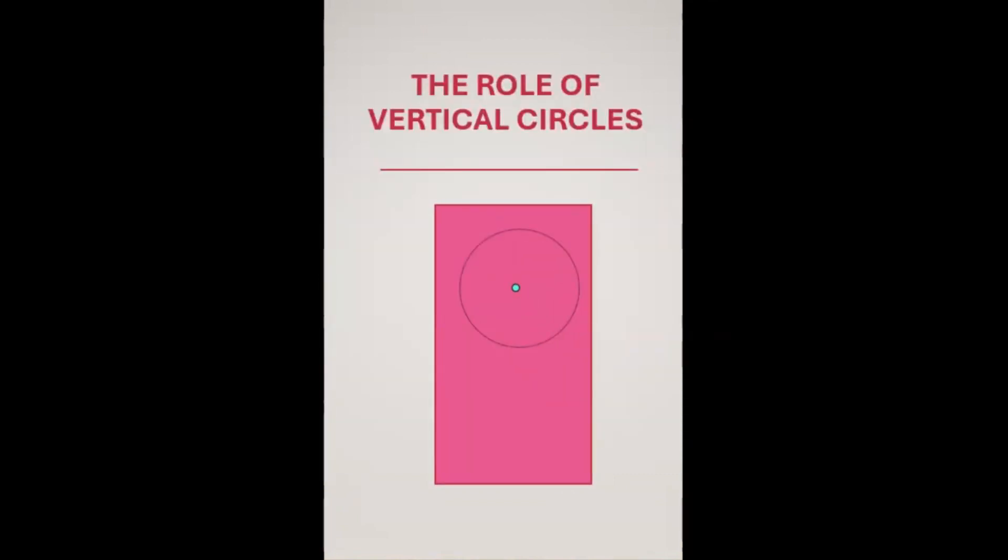A vertical circle in roller coaster is a loop where the track forms a complete circle in a vertical plane.